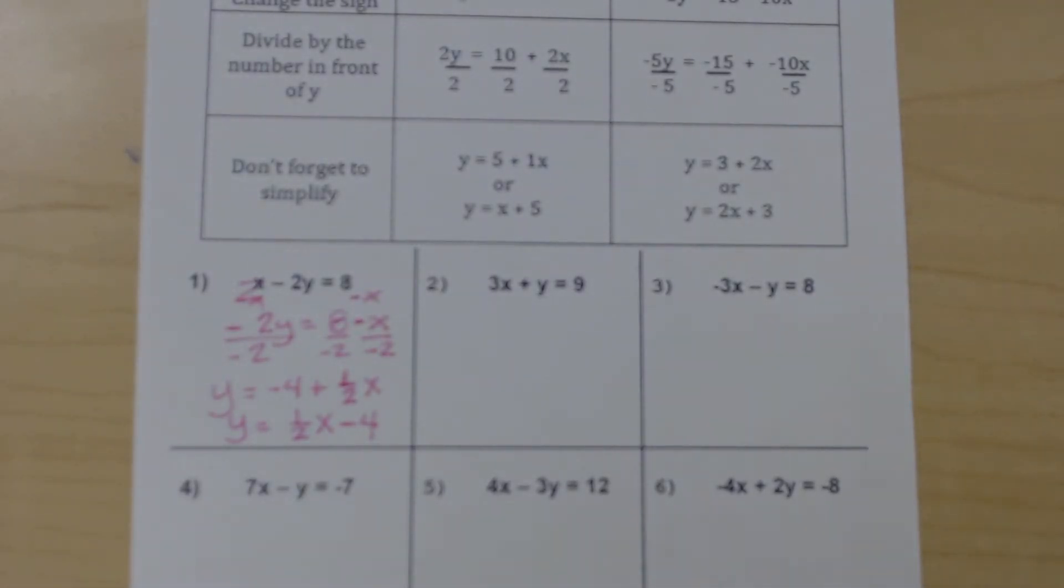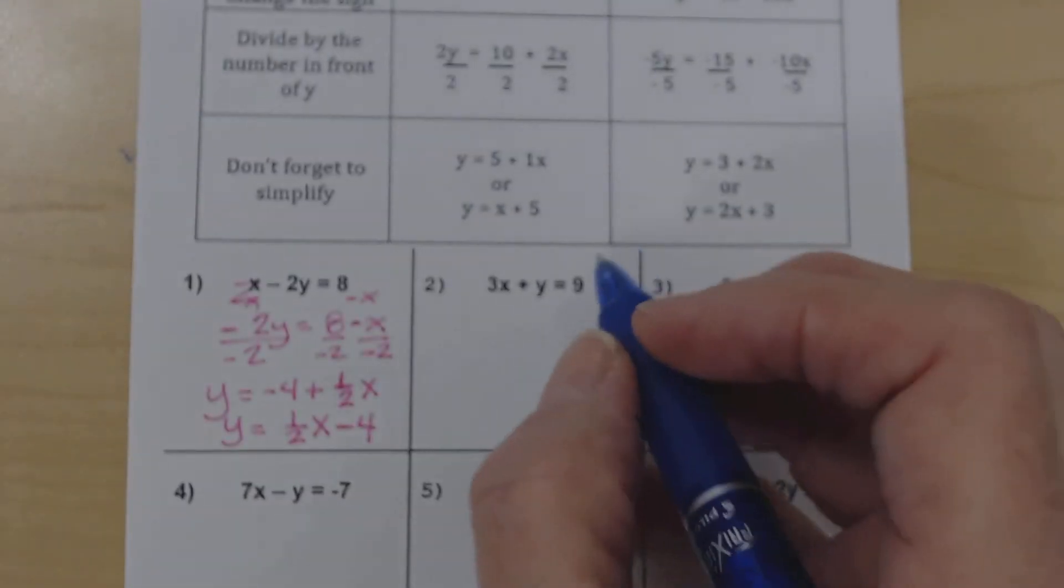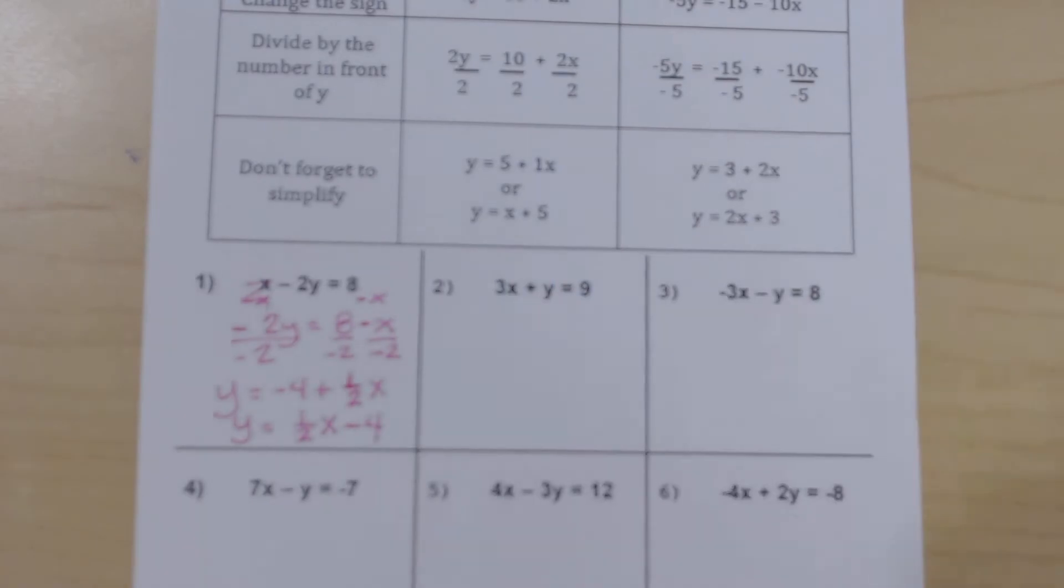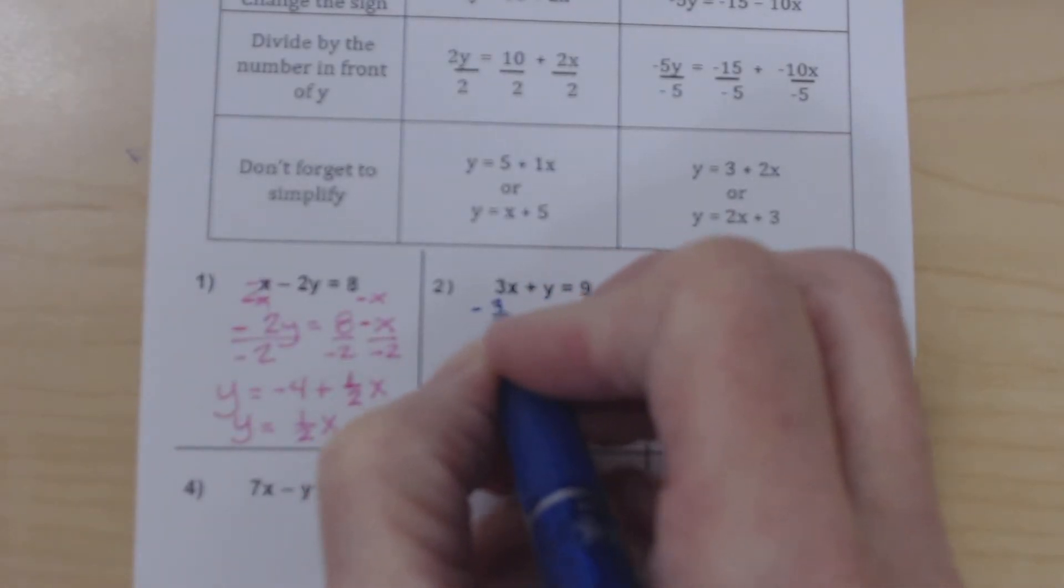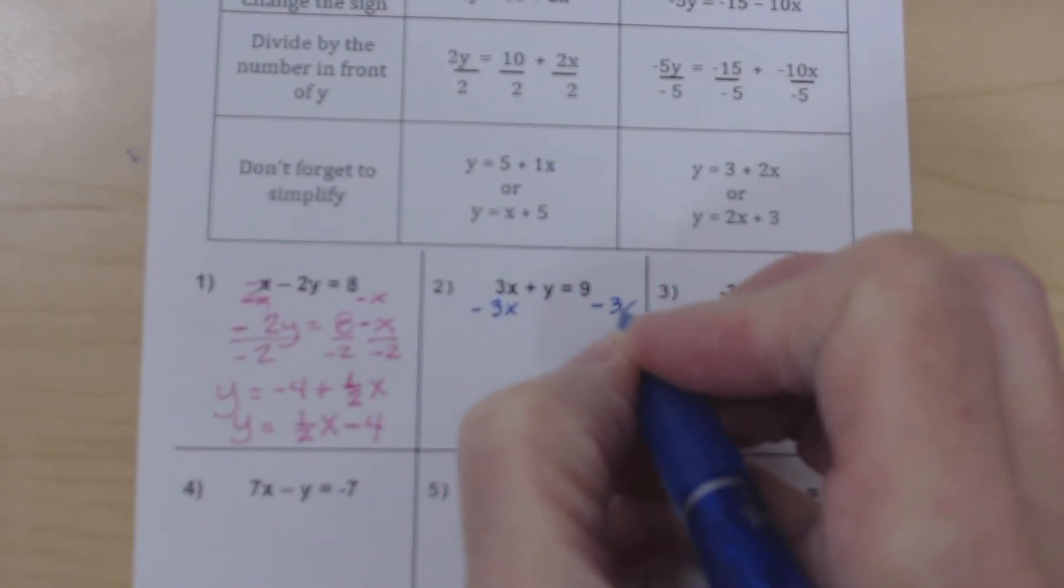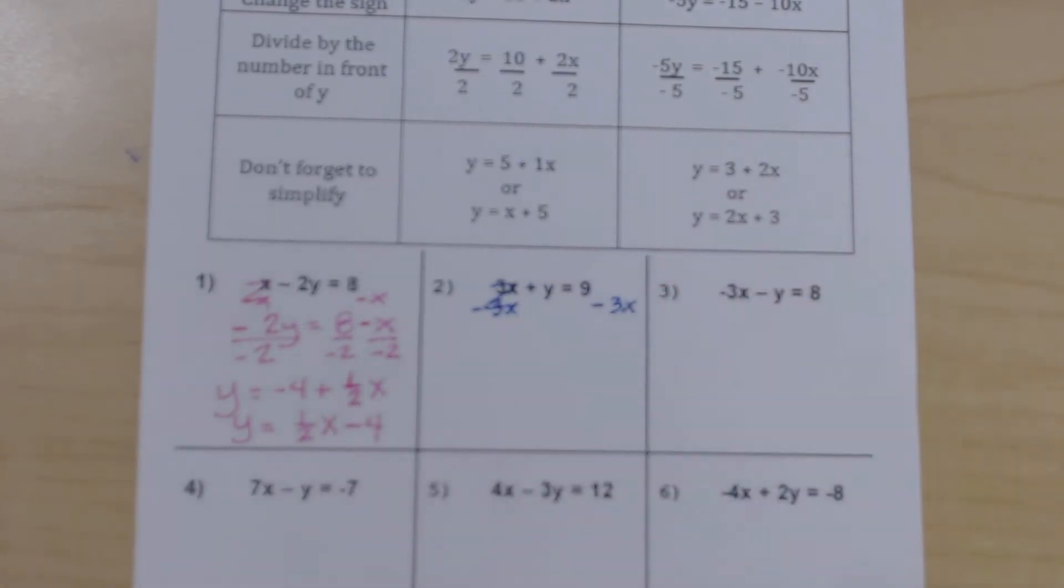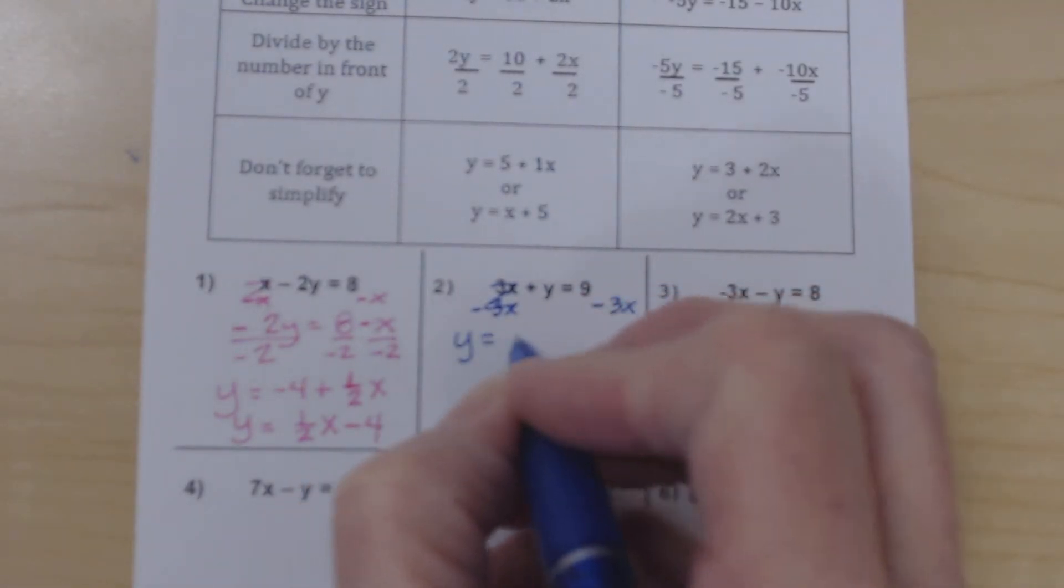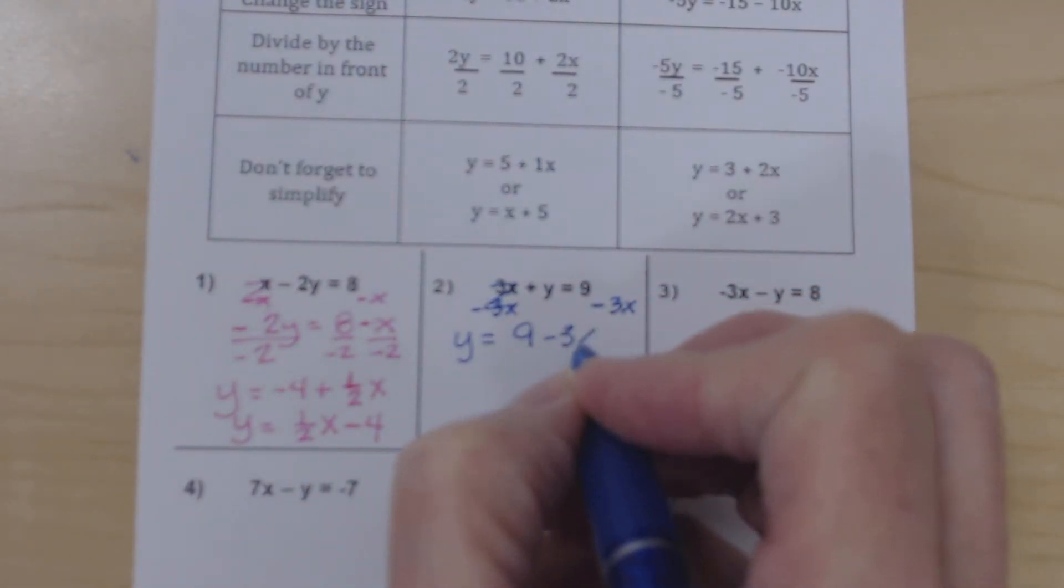For example 2, we have a positive 3x plus y equals 9. The opposite of positive is negative. So we're going to have a negative 3x on both sides. So we're going to move the x, change the sign by subtracting 3x from both sides. This zeroes out. We're left with y equals 9 minus 3x.